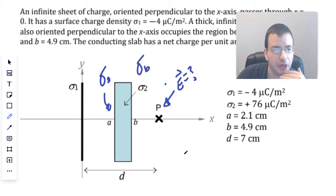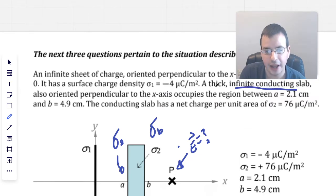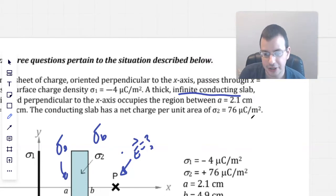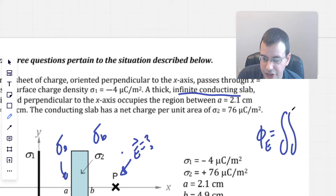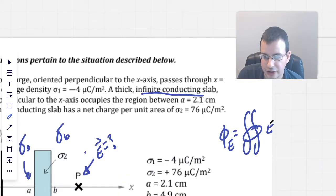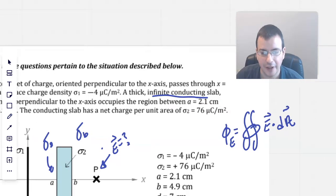So the first couple things to think about here is we know it's an infinite conducting slab, and what that means is we can use Gauss's law. So Gauss's law is something along the lines of electric flux equals a surface integral across a closed surface of electric field dot dA.